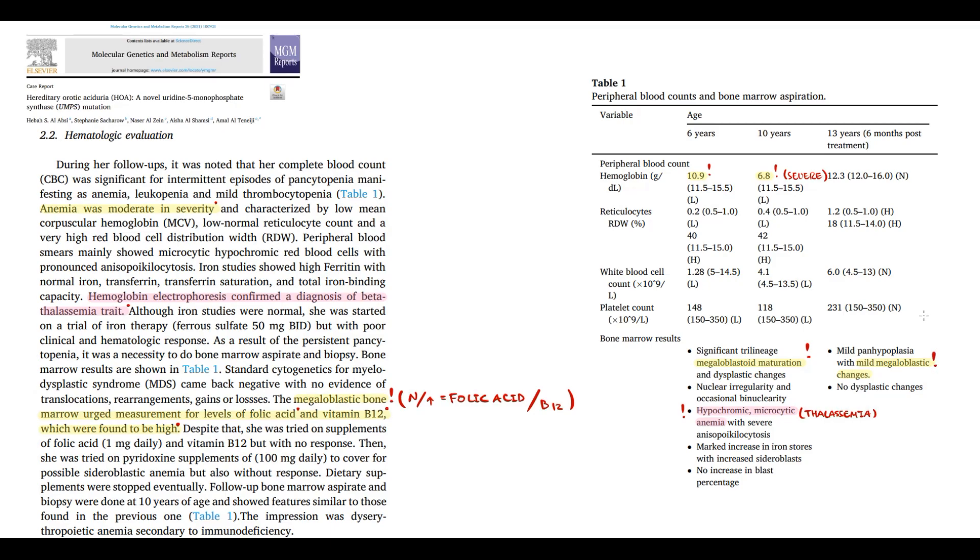It was highly unusual for a patient with megaloblastic maturation and megaloblastic changes. So based on megaloblastic bone marrow with normal folate and B12 levels, erotic aciduria was suspected.